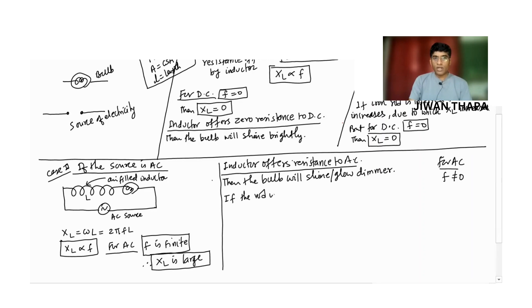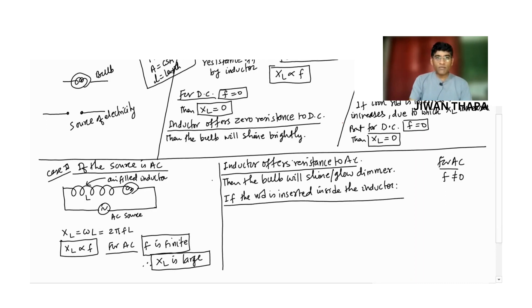If the iron rod is inserted inside the inductor with an AC source, the bulb will shine dimmer.